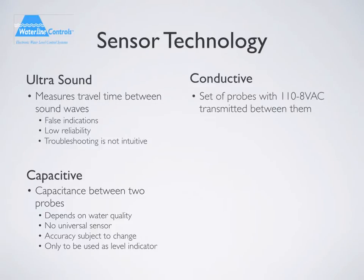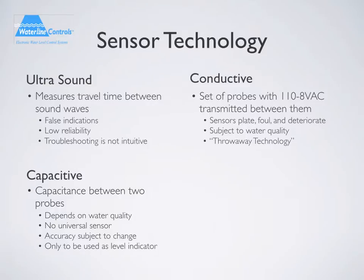Conductivity technology uses a set of metal probes with power transmitted between them, ranging between 110 volts AC to 8 volts AC. This method causes the probe tips to plate, foul, or deteriorate and are subject to water quality issues due to the electrical current transmitted between the probes. Some OEMs have termed this a throwaway technology due to poor reliability and performance. More importantly, no conductivity sensor has been listed by a nationally recognized testing laboratory such as UL, ETL, or FM.